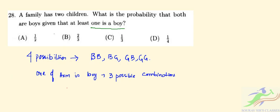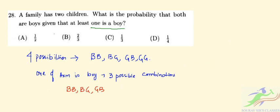Given that at least one is a boy, there are three possible combinations: boy-boy, boy-girl, or girl-boy. The probability that both are boys given at least one is a boy is 1 out of 3 possible combinations, so the answer is 1/3. The correct option is C: 1/3.